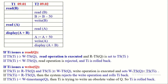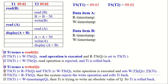Let us now discuss how these timestamp ordering protocol rules can be applied on a given non-serial schedule to determine if the non-serial schedule is conflict serializable or not. To apply these rules, we need two inputs: timestamp of transactions, and read and write timestamps of each data item. In this schedule, there are two data items A and B, so we maintain read timestamp and write timestamp for both data items.